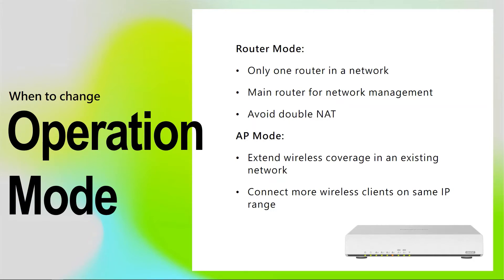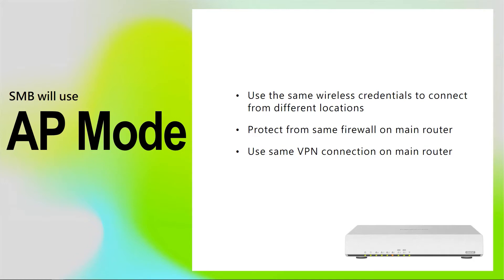In this case, you may need to reconfigure your LAN network to keep only one router and change all others to AP mode. Home users will use router mode when they only need one router in the network for network management and to avoid double NAT. Home users will use AP mode when they want to extend wireless coverage of an existing network, so more wireless clients can connect on the same IP range for easier file sharing. SMB will use AP mode when they want the ability to use the same wireless credentials as they move from one location to another, be protected by the same firewall on the main router, stay connected on the same VPN connection, and enable branch-to-branch file sharing or Chromecast-enabled apps to cast to the TV.